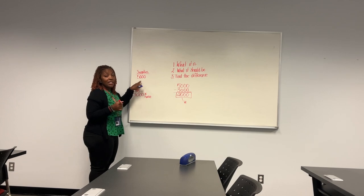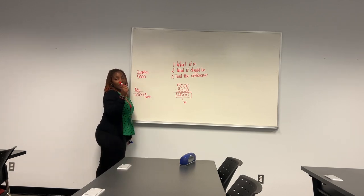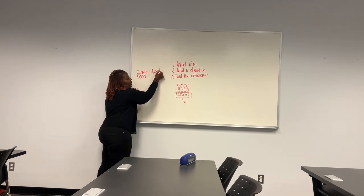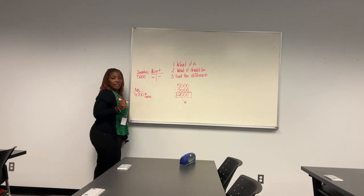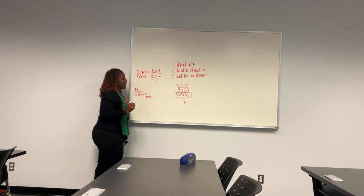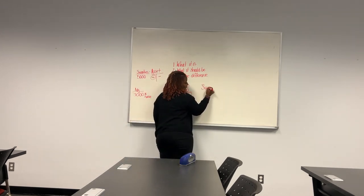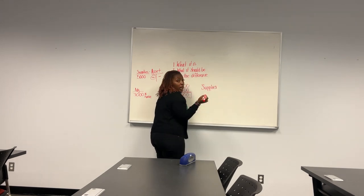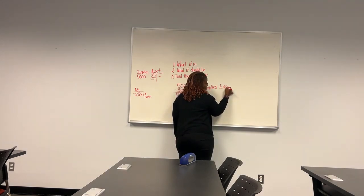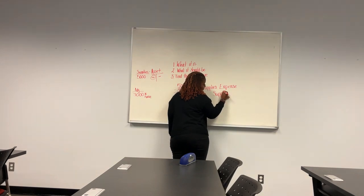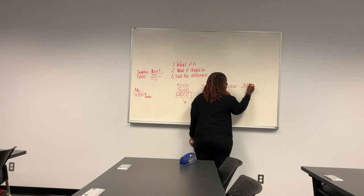If my balance in supplies is 5,000, what is the normal balance in supplies? Supplies is an asset. And remember, the normal balance is a debit. So if this is a debit balance, in order to get it to 3,000, I need to credit the 2,000. So my entry would be: debit supplies expense, because we used the supplies, and a credit to supplies for the amount of 2,000.